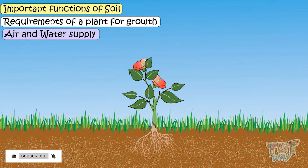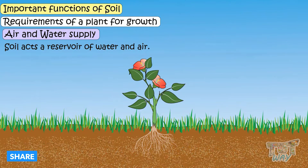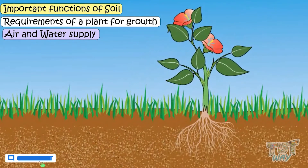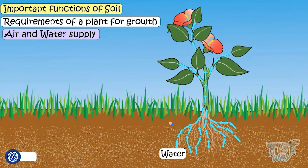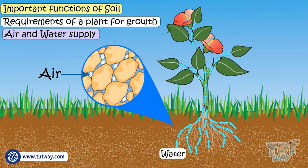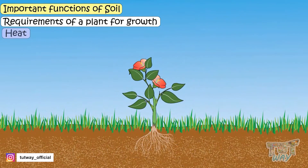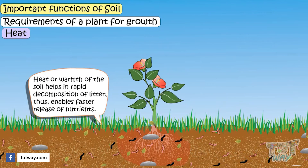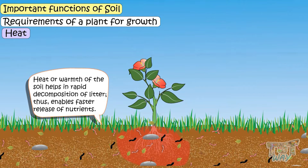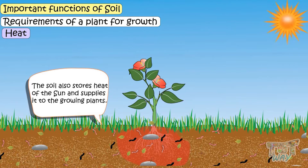Air and water supply: soil acts as a reservoir of water and air. Plants absorb water through their roots from this reservoir, and roots breathe in oxygen from the air stored in the soil mass. Heat or warmth of the soil helps in rapid decomposition of litter, thus enabling faster release of nutrients. The soil also stores the sun's heat and supplies it to the growing plants.